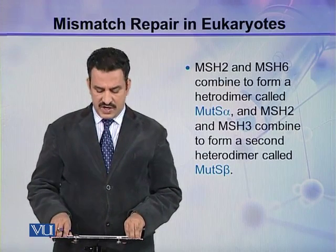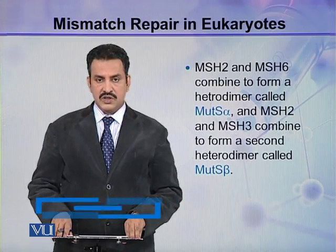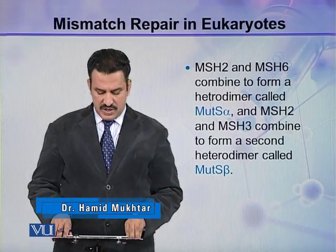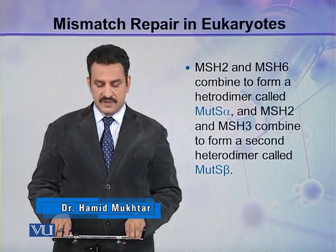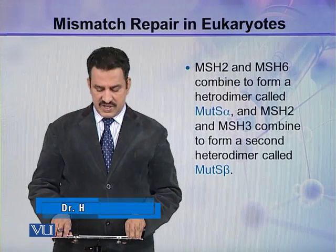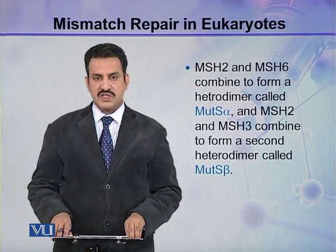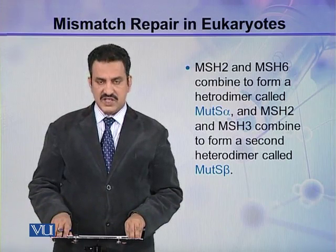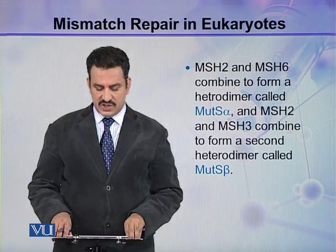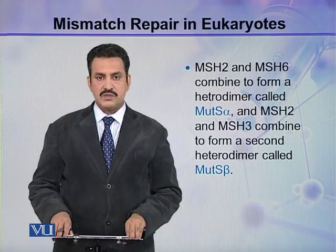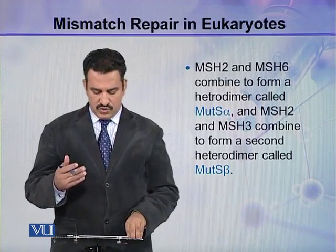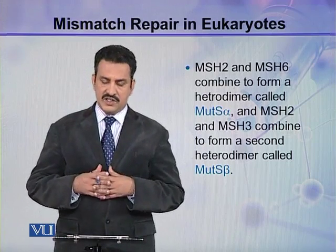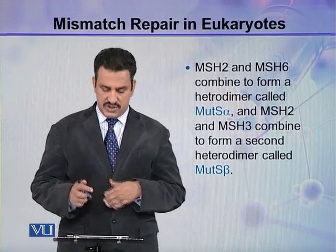MSH2 and MSH6 combine to form a heterodimer called MutS alpha. Similarly, MSH2 and MSH3 combine to form a second heterodimer called MutS beta. So there are two heterodimers: MutS alpha and MutS beta.